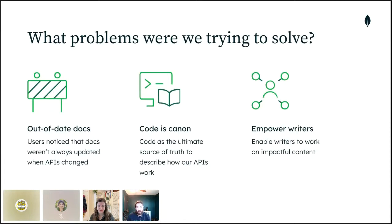The second problem: we wanted the code to be canon. Because we already had several years worth of code and wanted it to be the ultimate source of truth for our reference docs, we chose to annotate the existing REST API using the SwaggerCore Java library. SwaggerCore allows developers to add annotations to existing Java code to generate an OpenAPI specification every time that code is built, so we can provide docs that exactly match how these resources work in production.